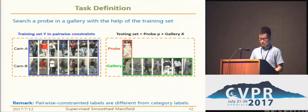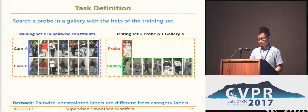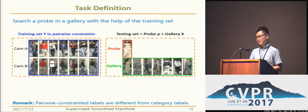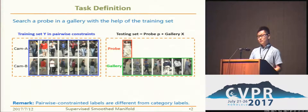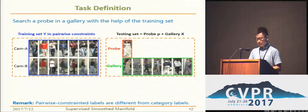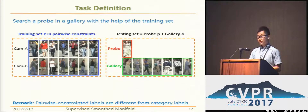The aim of personal ratification is to identify the same person from different cameras. Usually we have a training set labeled in pairwise constraints. The pairwise constraints are different from the category labels we already use. It defines which two images belong to the same person.